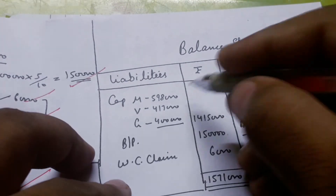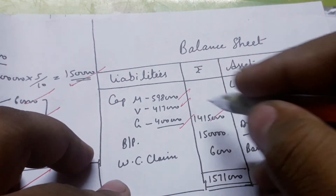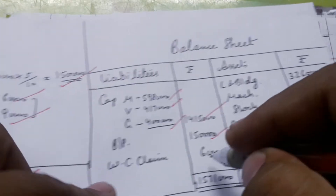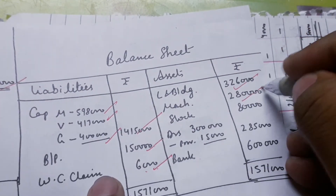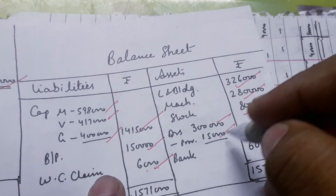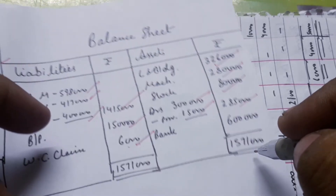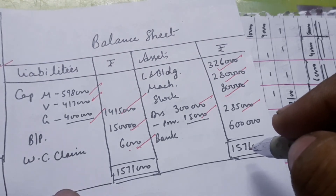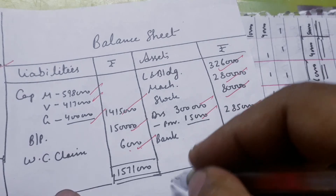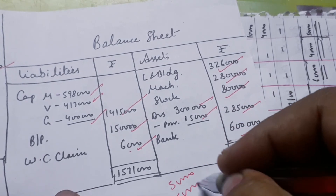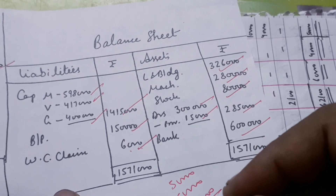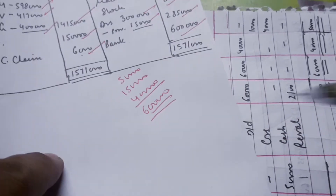Come to the balance sheet. Capital is written in new values: 14-15, all together. Bill payable as it is. Workman Commission claim as new liability. Land building 26, machine as it is, stock as it is, debtor provision in new value 15,000, and bank. New partner had 4,000,000. The new partner had 50,000,000 plus $8,000,000 premium and $4,000,000 capital, giving $6,000,000. Bank is included. Question number 62 is complete.